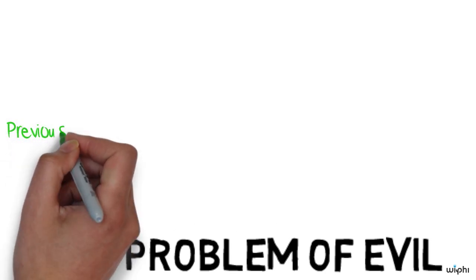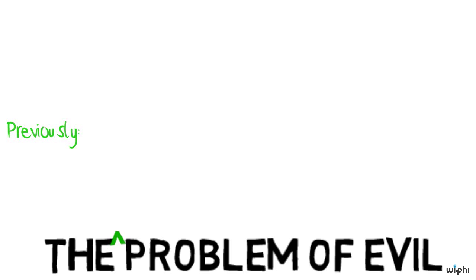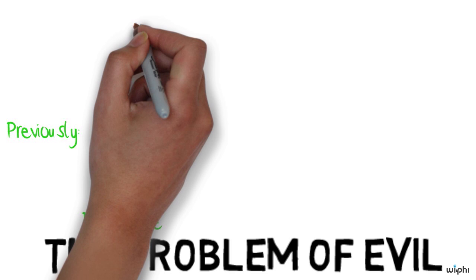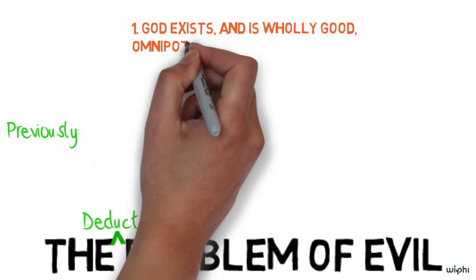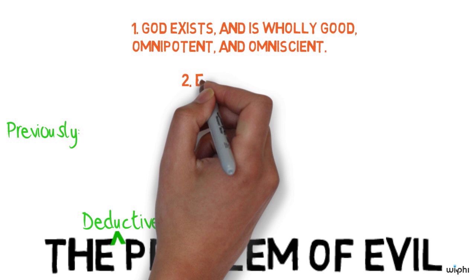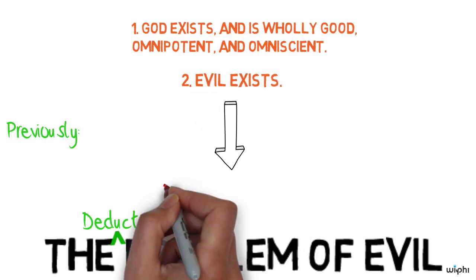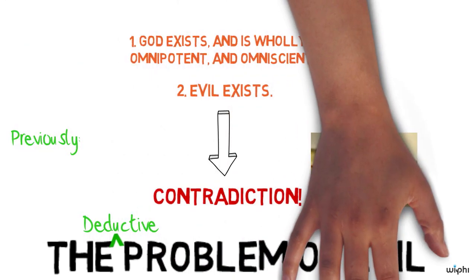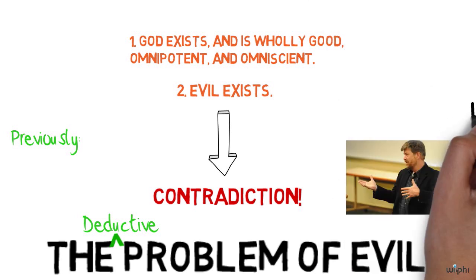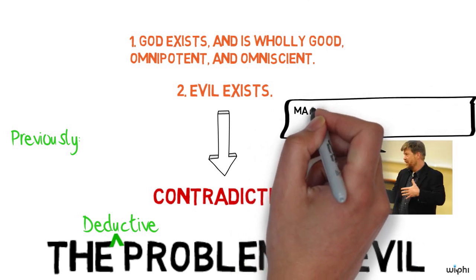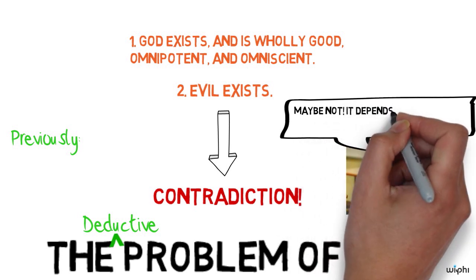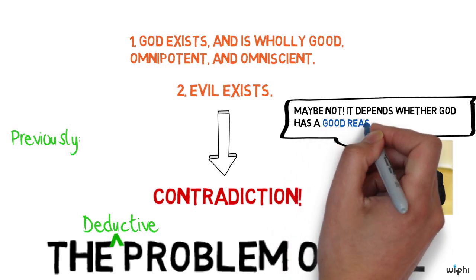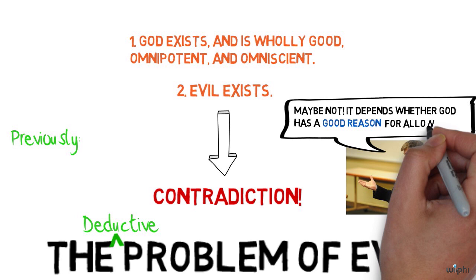And today we're talking about the philosophical problem of evil. In previous discussions, we've seen the charge of contradiction or the deductive logical problem of evil discussed. And this is the claim that there's a contradiction in asserting that God exists, God is wholly good, all-powerful and all-knowing, and that evil exists. The solution to this charge of contradiction, we found, was in the idea that God might have a good reason to allow evil.